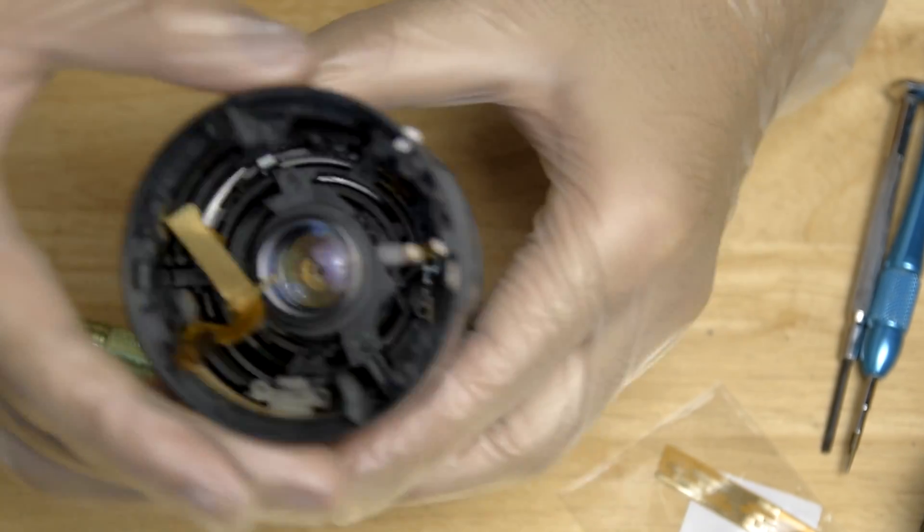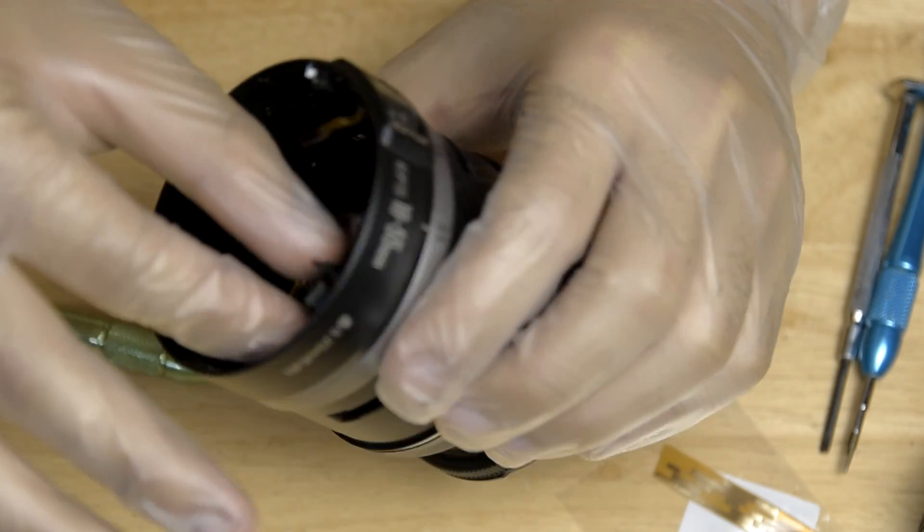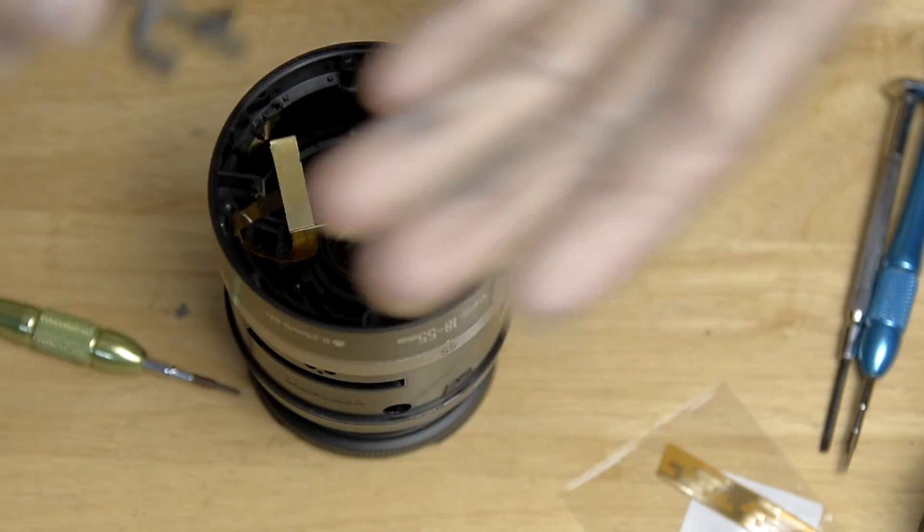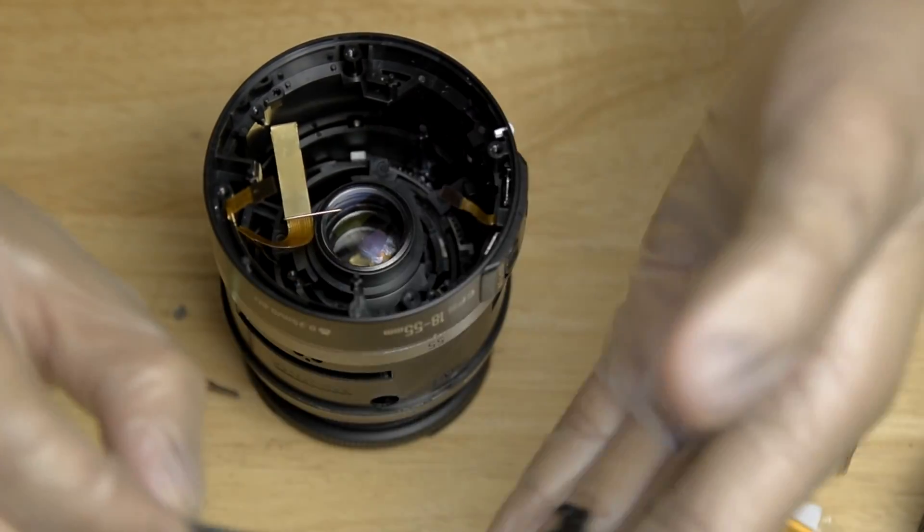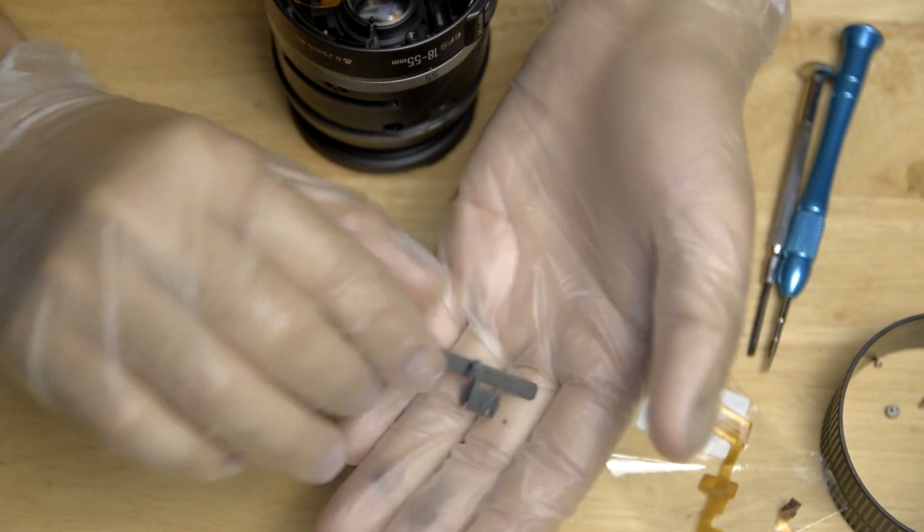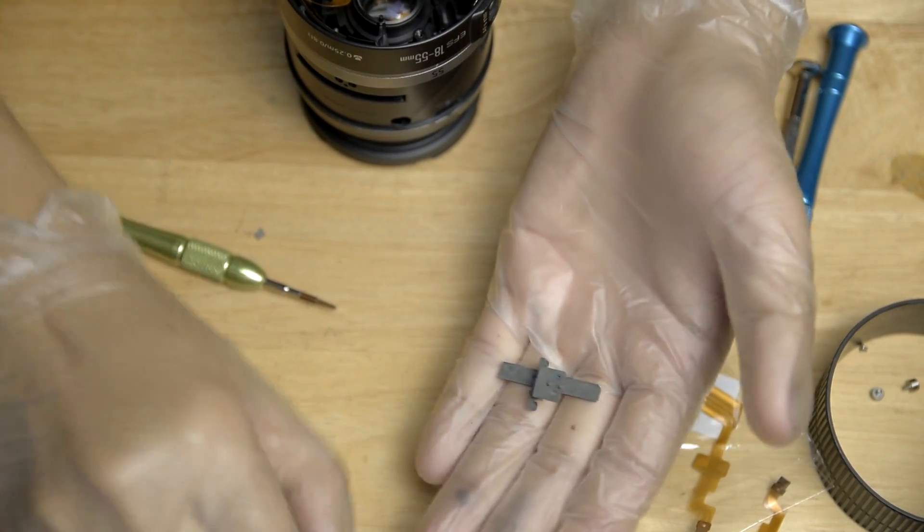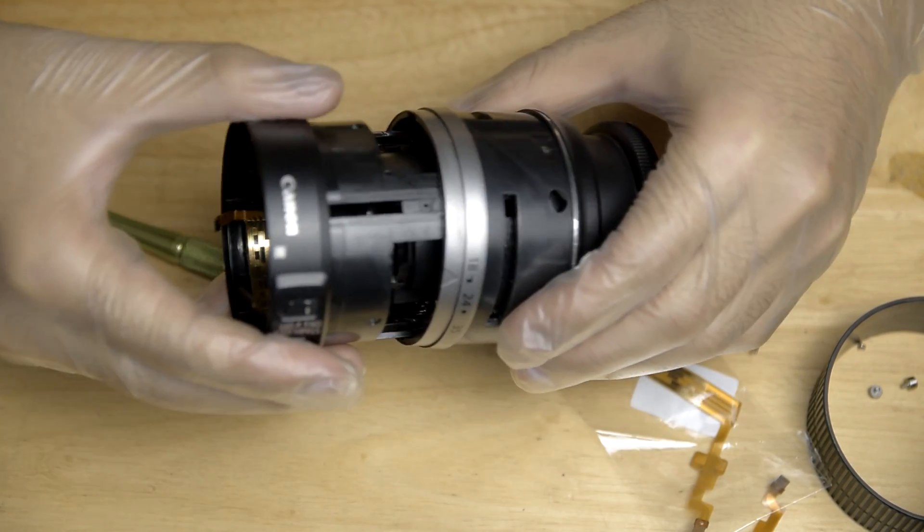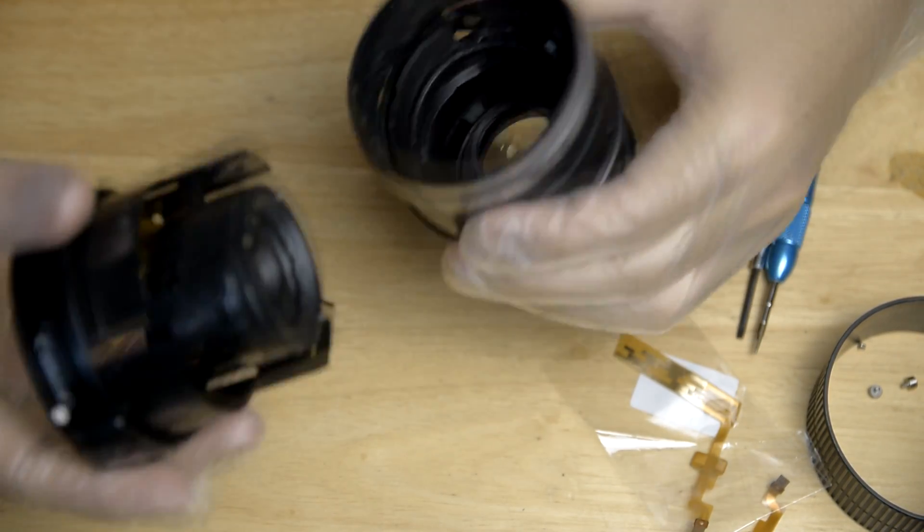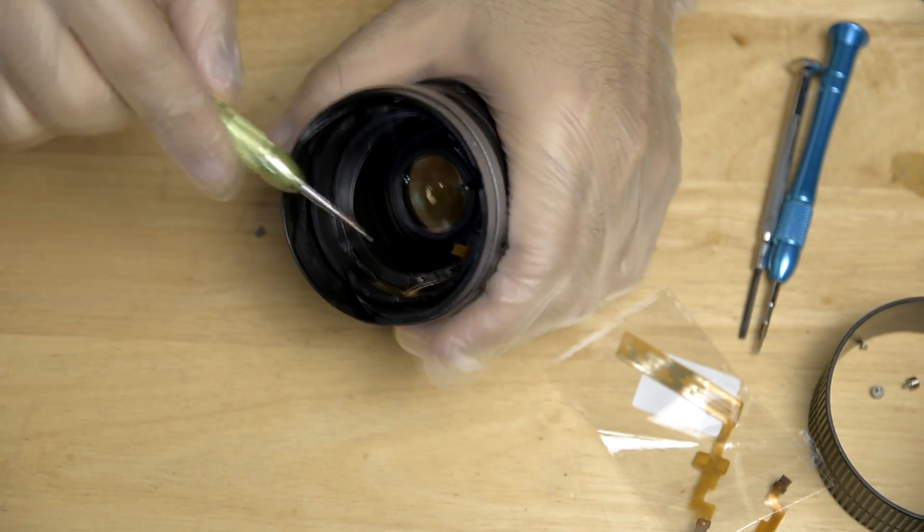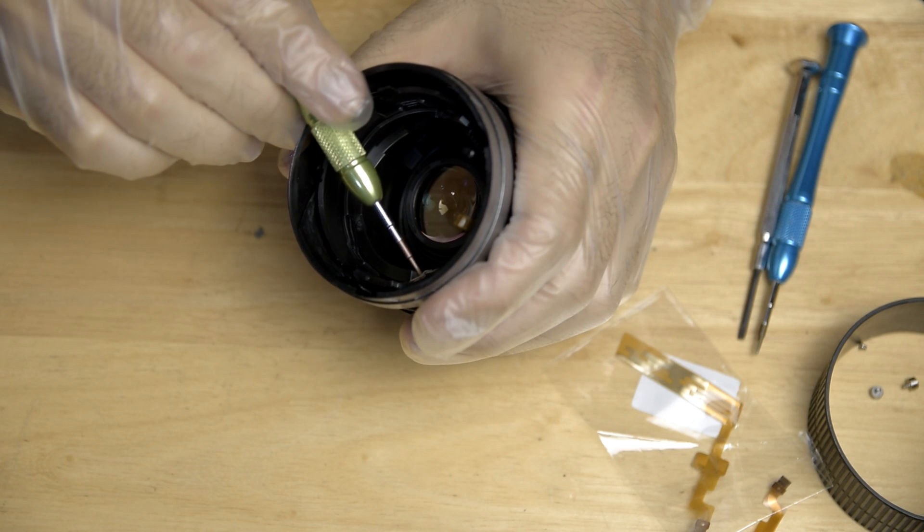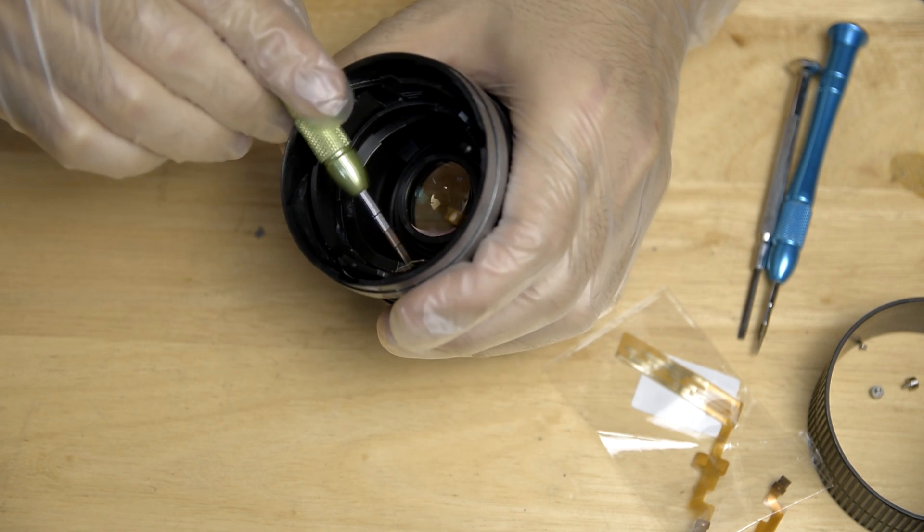Be careful with the aperture flex cable because it is very fragile. And then I just removed the controller of the aperture, I don't know what exactly it's called. And after that, we can now remove and separate the lens from the cover. And then you can now remove the contact brush off the focus.